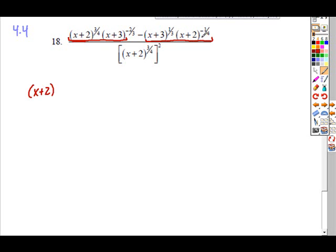So we're always going to factor out the smallest power. So what's smaller, 3 fourths or negative 1 fourth? Always take out the negative or whatever's furthest to the left on the number line. And move to the next base that's common is x plus 3. Take out the smallest power between negative 2 thirds and positive 1 third. So again, furthest to the left on the number line.